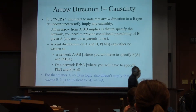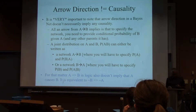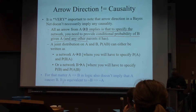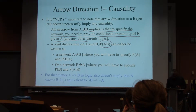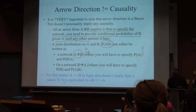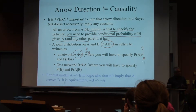For the same domain, I can write any of these networks, and you can't very well have every network in causal direction. An arrow from A to B implies that to specify the network, you need to provide the conditional probability of B given A. And a joint distribution of A and B, P(A,B), can either be written as a network where A is linked to B, or a network where B is linked to A. Given the joint distribution, either of those networks will capture the terms.